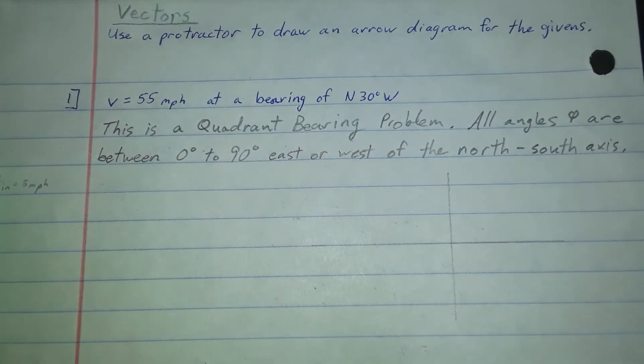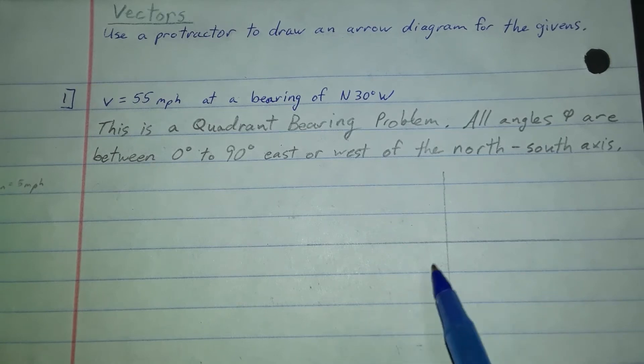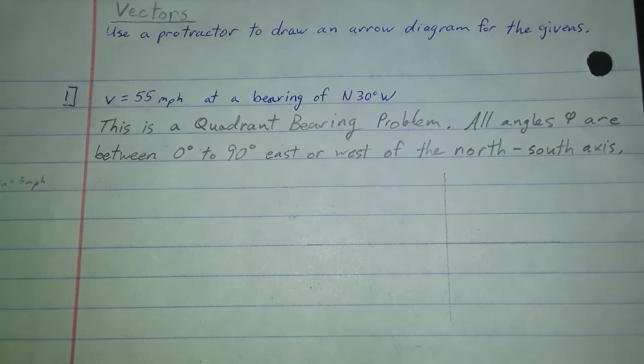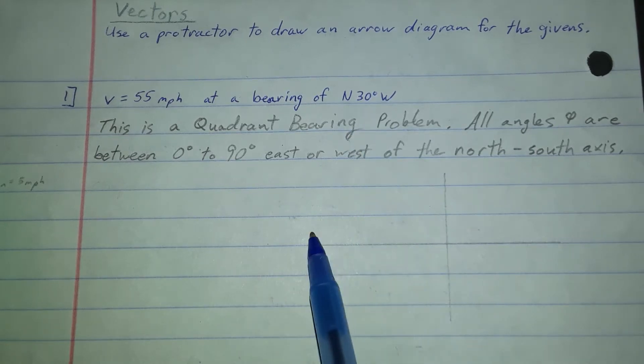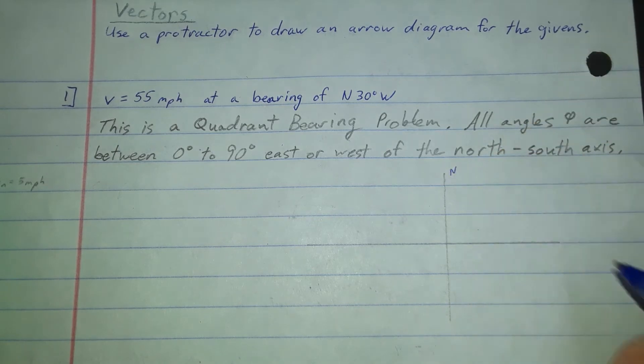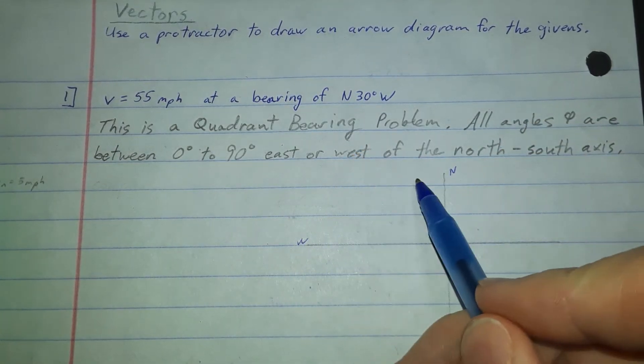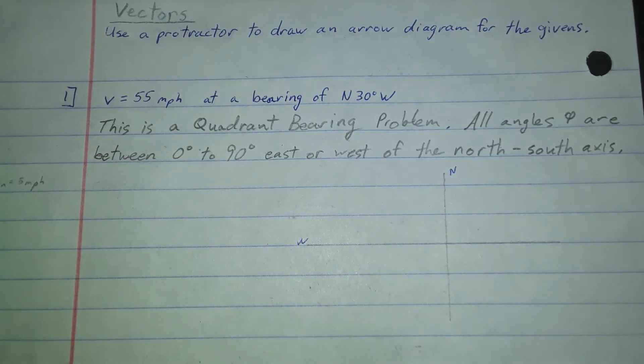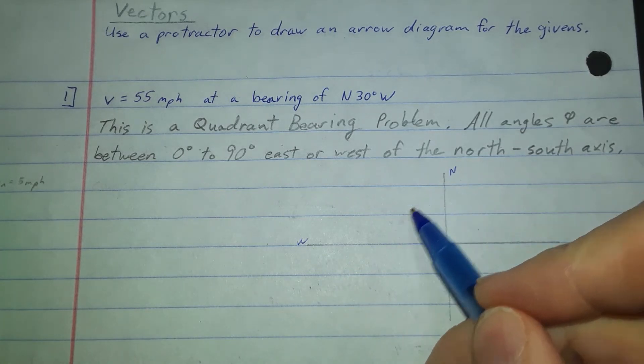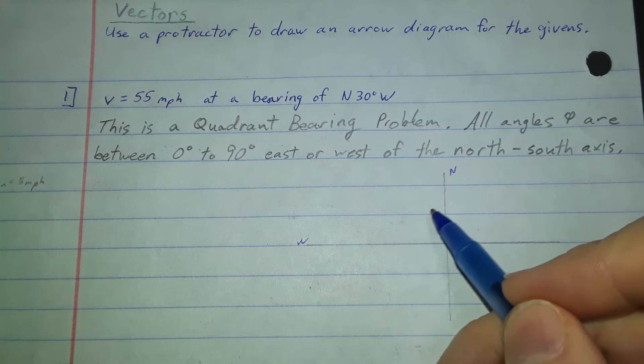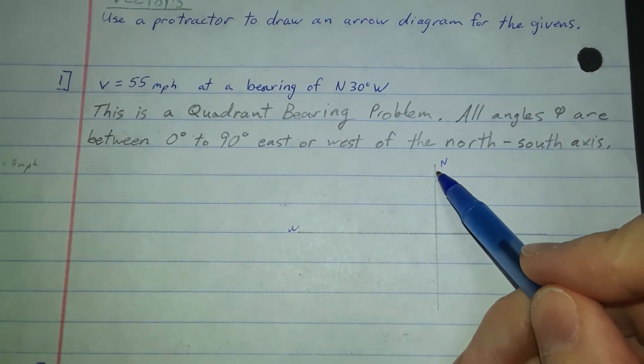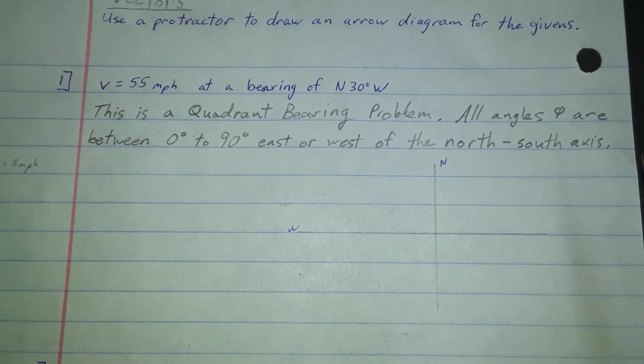The first thing that I want to do is I want to draw my arrow. These are called arrow diagrams. I need to figure out what is 30 degrees west of north. North is up here. West is out here. So we're going to be in this quadrant here. This is west of north. We want 30 degrees in here. We're going to measure from north towards the west, 30 degrees.